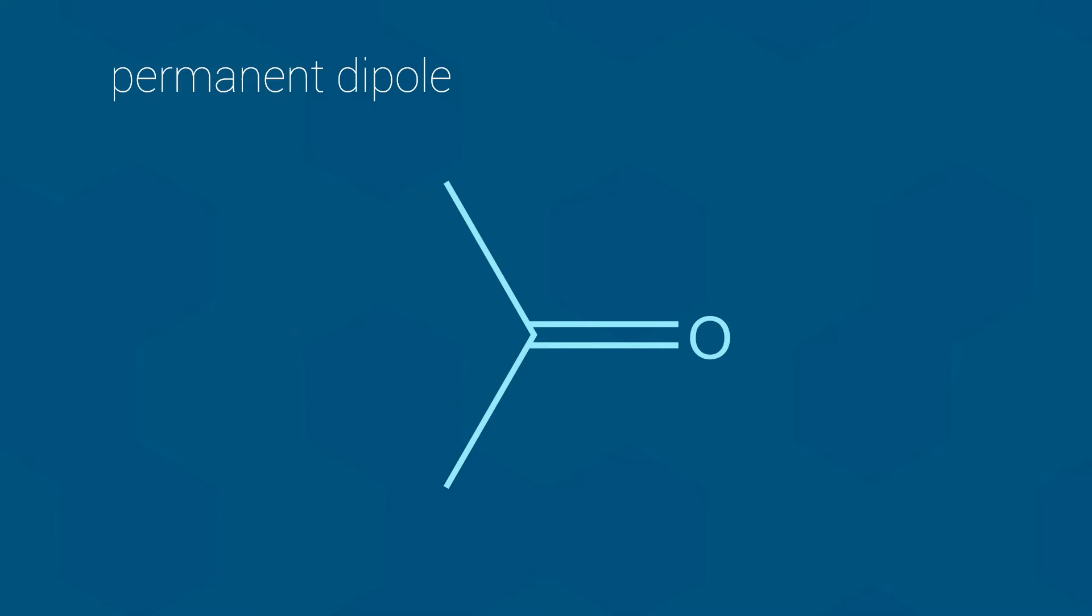The carbon-oxygen double bond has a sizable dipole as we can see by looking at the electronegativity values. The carbon atom has an electronegativity of 2.55, while the oxygen has a value of 3.44. Subtracting one from the other and taking the absolute value gives us a difference of 0.89, which, if you recall from the electronegativity video, puts this double bond firmly in the polar bond region of the spectrum.